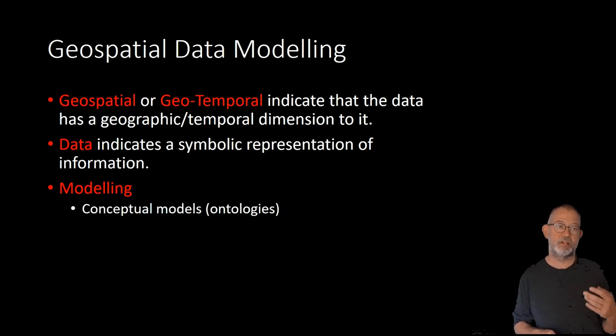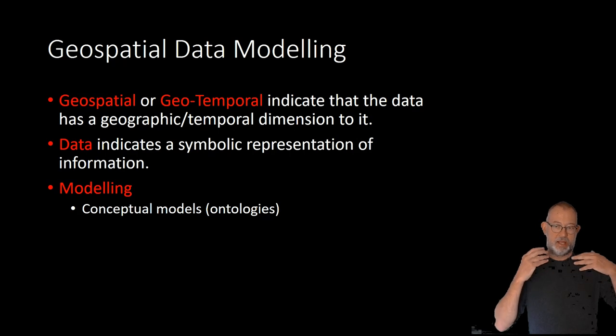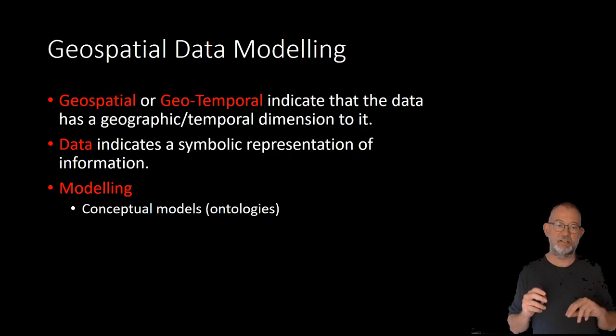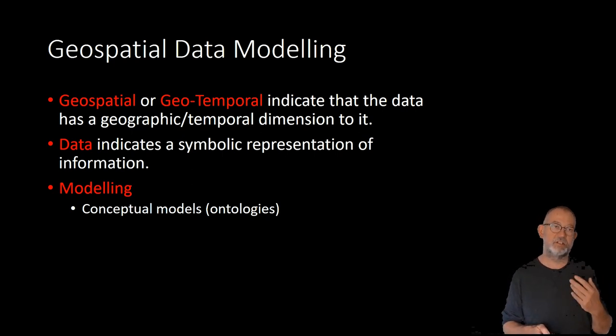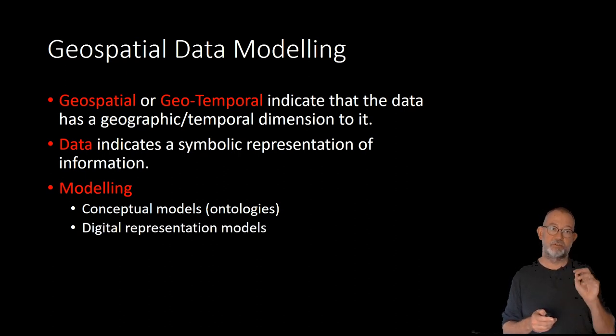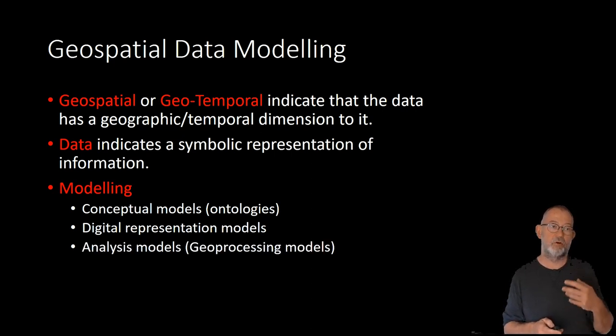First of all, we'll talk about conceptual modeling or ontologies where we define what we see. So if we have a reality, we will have to define an ontology or a conceptual model through which we can decide which aspects of the real world, the reality that we see. So, for instance, do we see trees and not roads? That is all part of this conceptual model. Then we'll talk about digital representation models. So how our geotemporal or geospatial data is represented in digital form on the computer.